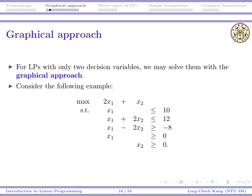The example we're going to use is this one. We want to maximize 2x1 plus x2 subject to these five constraints. Two of them are sign constraints.